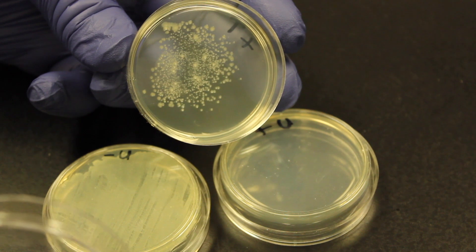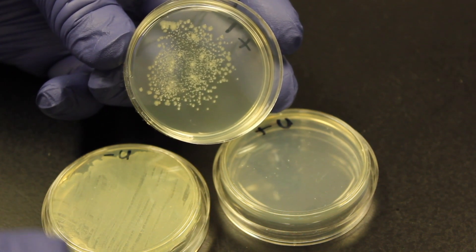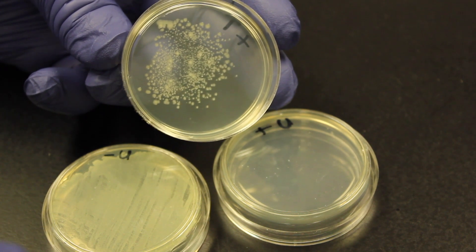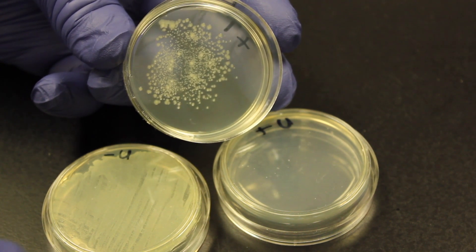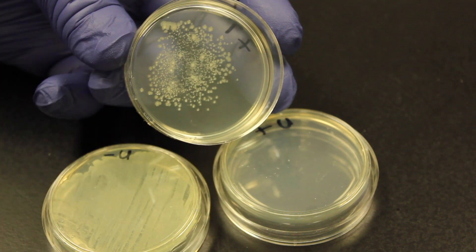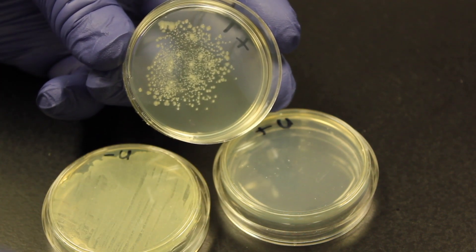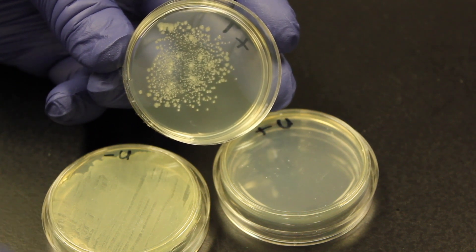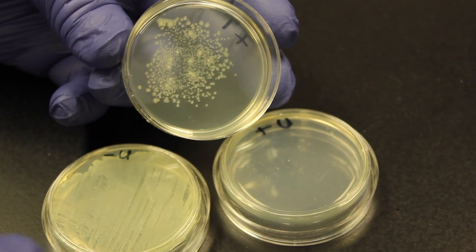These are ampicillin resistant. Since X-gal is on it, nothing is blue. So all of these have the ligated vector inside. If ligation failed then the colonies would be blue. And I see no colonies that are blue. So all of these went through ligation and have the ligated vector inside them.